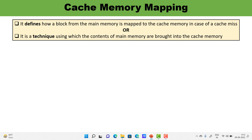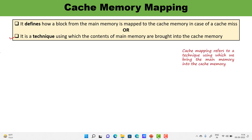When we talk about cache memory mapping, it means there is a main memory and there is a cache memory, and the content which is being frequently used is being copied from main memory to the cache. Mapping techniques tell us which content of main memory is being brought into the cache memory — that is the concept of cache mapping, which block of main memory is to be copied into cache.